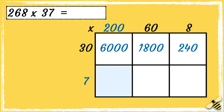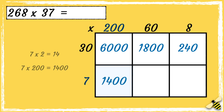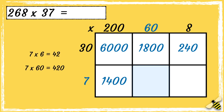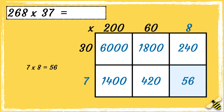Then we can work out 7 times 200. I know that 7 times 2 is 14, so 7 times 200 is 1400. Then we work out 7 times 60 — I know that 7 times 6 is 42, so 7 times 60 is 420. Then finally, we can multiply 7 times 8, which is 56.